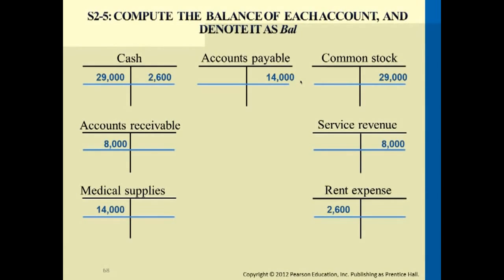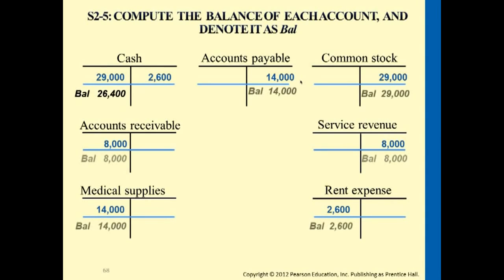Looking at all accounts used across these four transactions, we have seven accounts total. For assets: cash, accounts receivable, and medical supplies. For liabilities: accounts payable, from the transaction where we promised to pay later. For equity: common stock, raised from the public. Then service revenue and rent expense. We summarize the balance on the normal balance side for each account — assets on the debit side, accounts payable on the credit side, common stock also on the credit side, and expenses on the debit side.